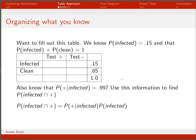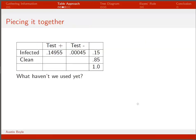The intersection equals the conditional probability times the marginal probability. Plugging in the numbers we get 0.14955, and we stick that in the table. We know that infected-and-positive plus infected-and-negative must equal the total infected probability of 0.15.